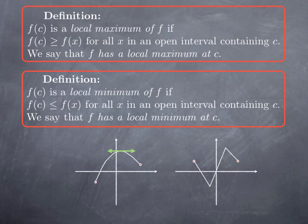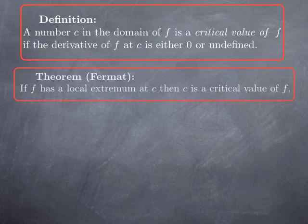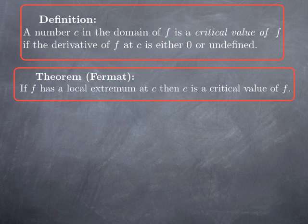This leads to the following definition. We call a value in the domain of a function a critical value for that function if the derivative at that number is either 0, corresponding to a horizontal tangent, or undefined, which corresponds to corner points. We then have the result that if f has a local extremum at c, then c is a critical value of f. In other words, the only places where we may have a local maximum or minimum are where the derivative is 0 or undefined.